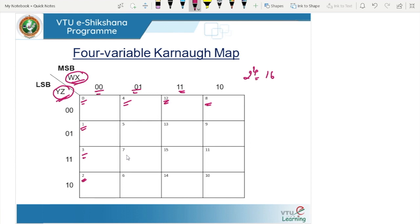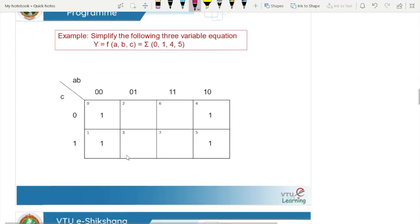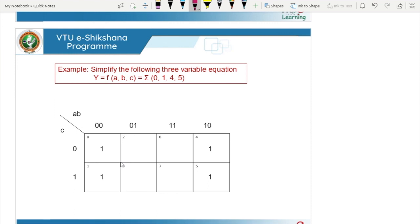We will now see how to solve or minimize using the Karnaugh map. The example says: simplify the following 3-variable equation Y = f(A, B, C) = Σ(0, 1, 4, 5). When we have the min term list like this, the first step is to enter all the min terms into the K-map. So 1 is entered at position 0, 1, 4, and 5.